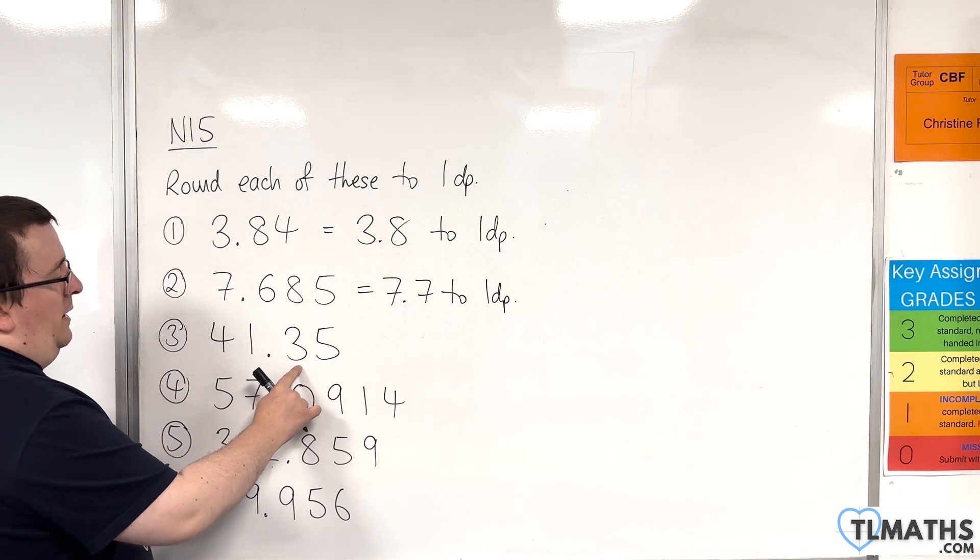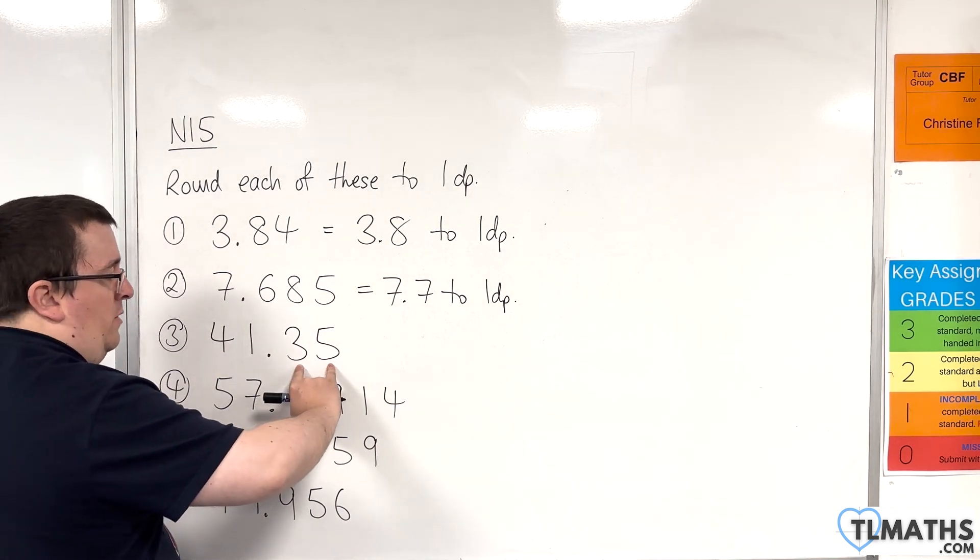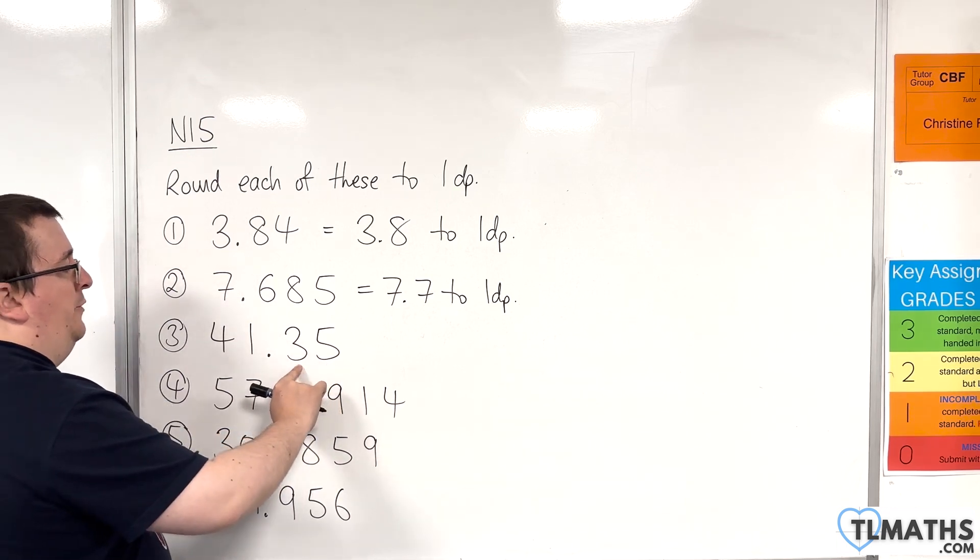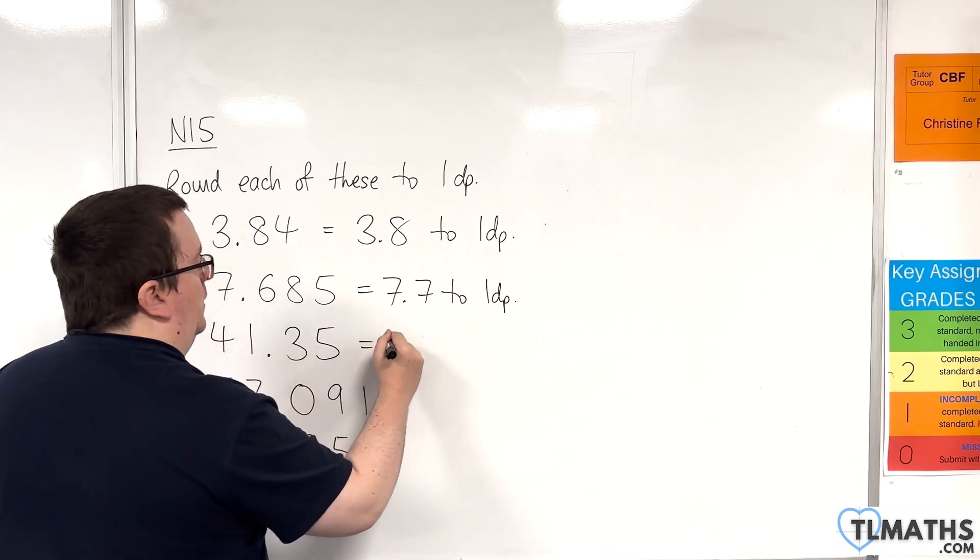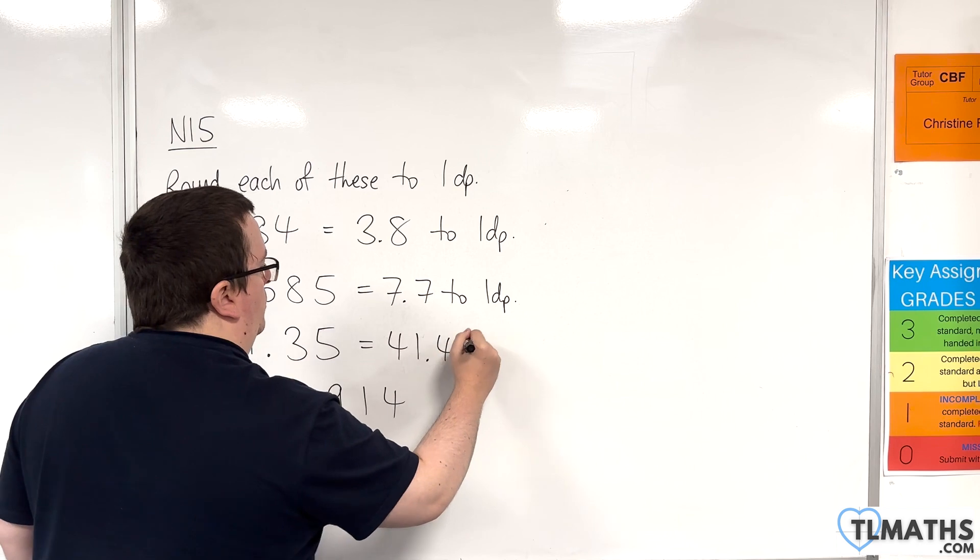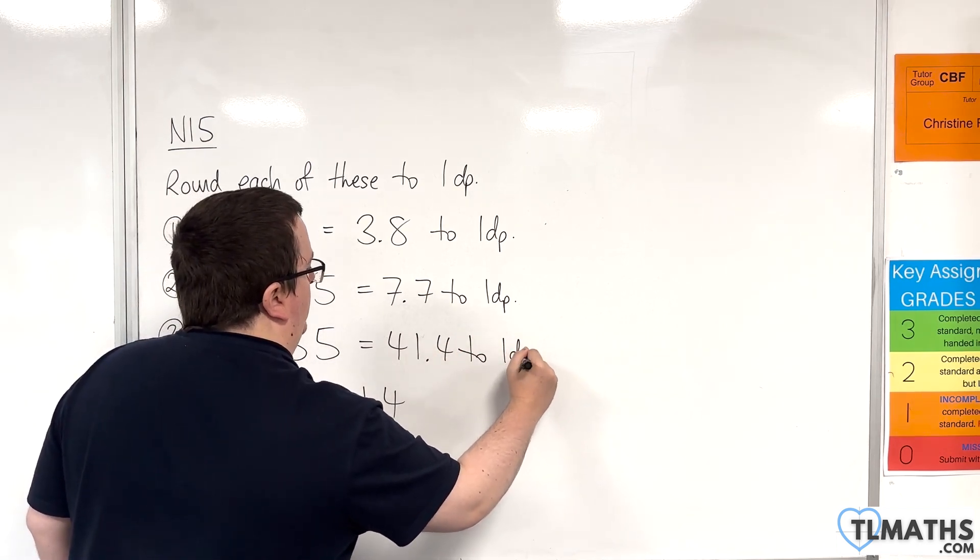Look at the first decimal place. The number to the right is 5 or more, so we round this up to 41.4. 41.4 to one decimal place.